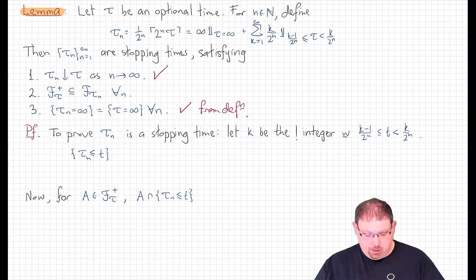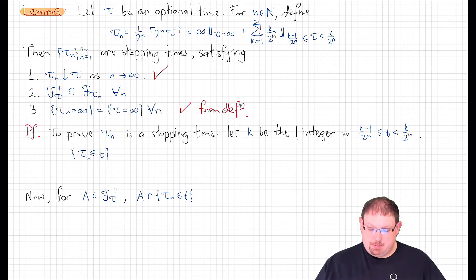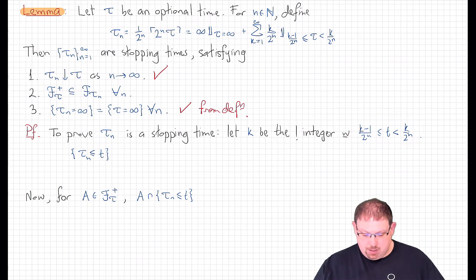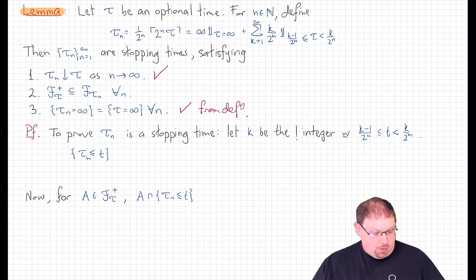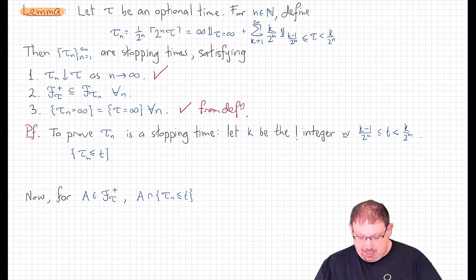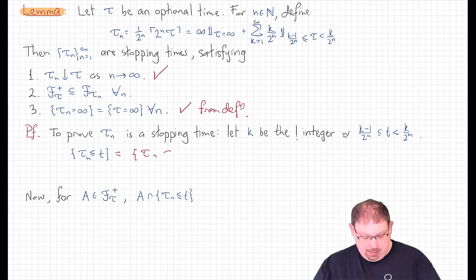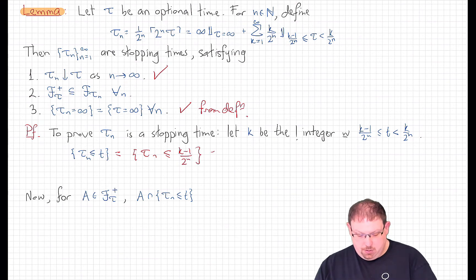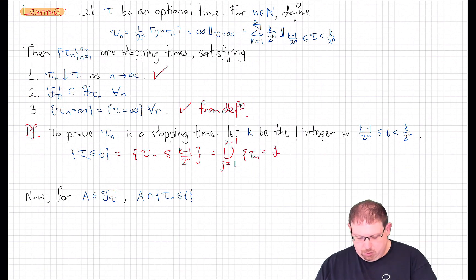All we really need to show is that tau_n is a stopping time satisfying the sigma-field inclusion. To show it's a stopping time, we want to show the event {tau_n ≤ t} is in F_t for each t ≥ 0. We can find a unique integer k so that t is in [(k−1)/2^n, k/2^n). Since tau_n only takes values in the dyadic rationals with denominator 2^n, the event {tau_n ≤ t} is the same as the event {tau_n ≤ (k−1)/2^n}, which is a finite union of events {tau_n = j/2^n} for j from 1 up to k−1.